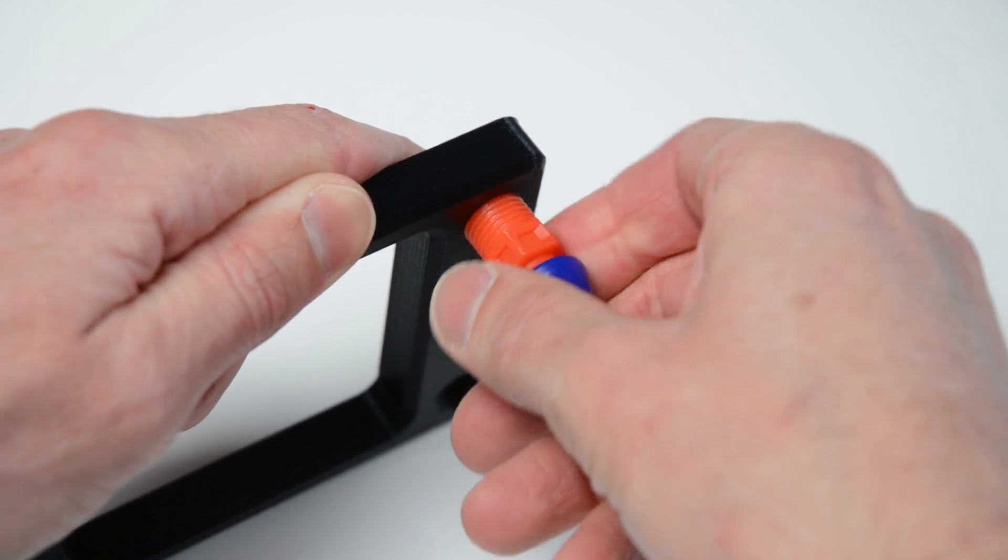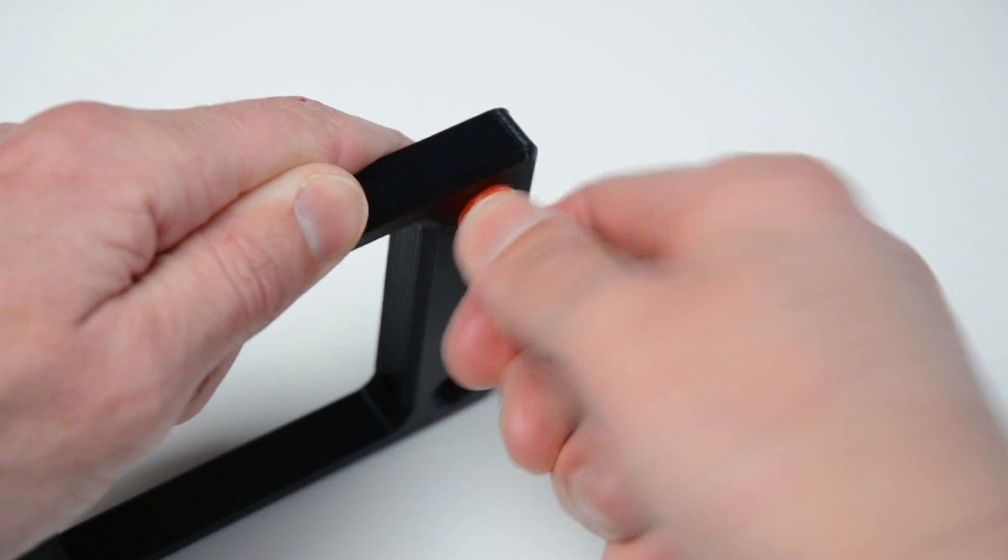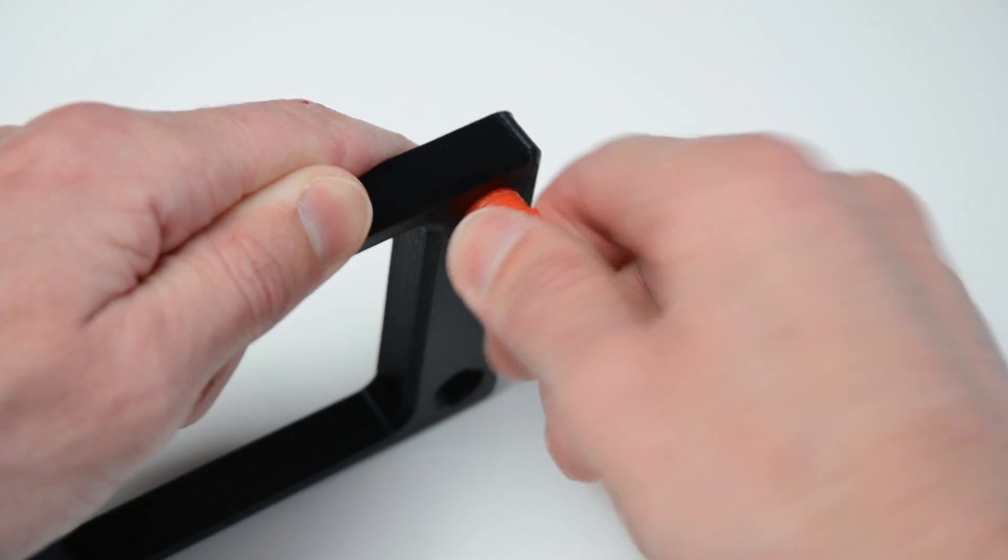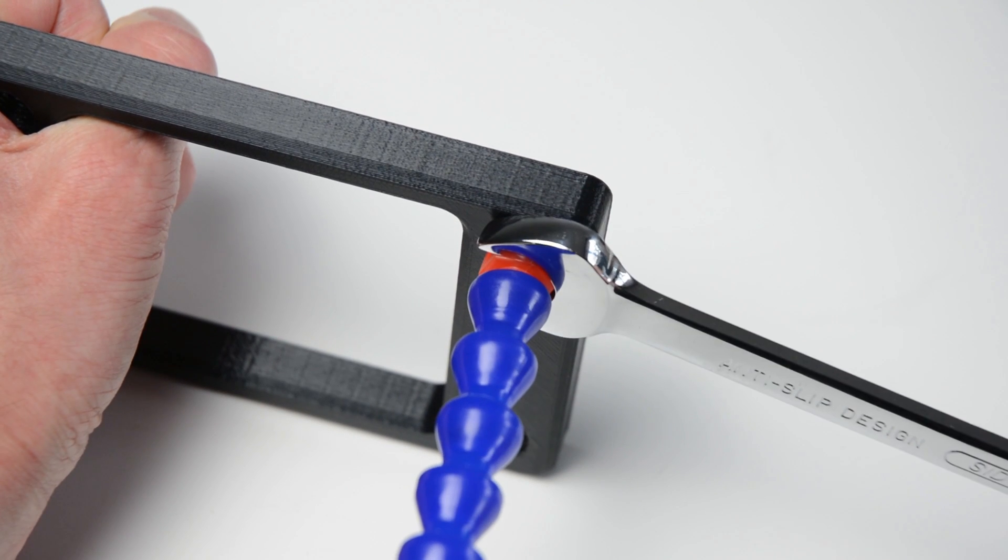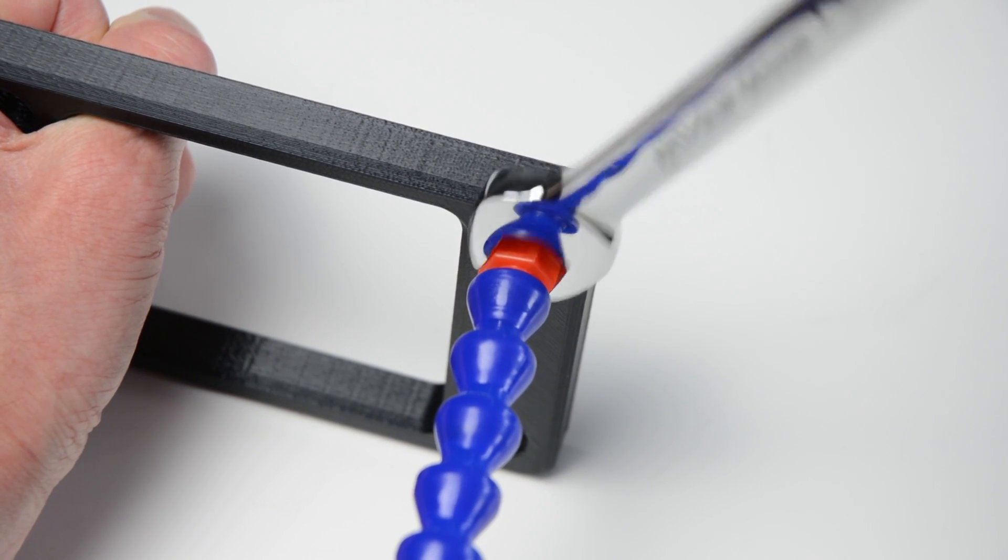Take the printed base and by hand begin to screw in the flexible pipes. Finish installing the pipes by using an open end spanner. Repeat this process for the next three pipes.